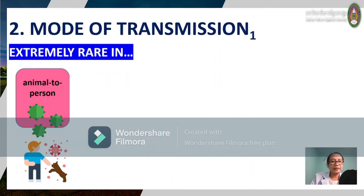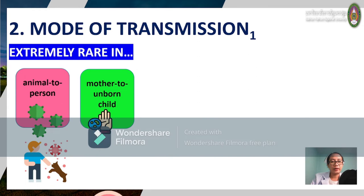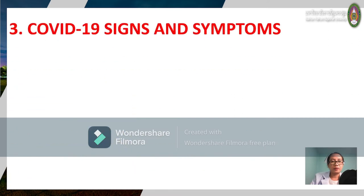Transmission is extremely rare from animal to person. For mother to unborn child, when a mother tests positive, both the child and the mother after delivery are separated into a separate isolation group.